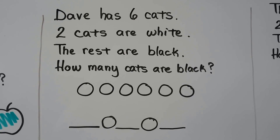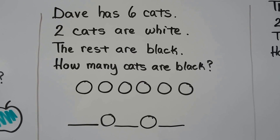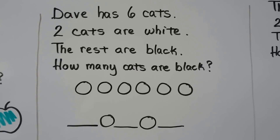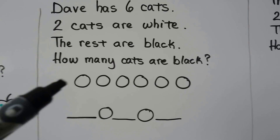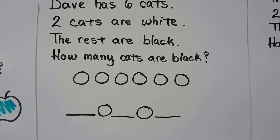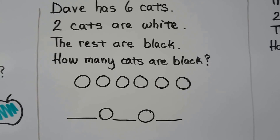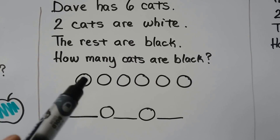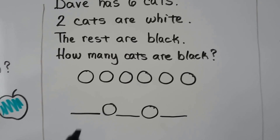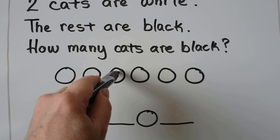Dave has six cats. Two cats are white, the rest are black. How many cats are black? We make six circles: one, two, three, four, five, six for the six cats. Two cats are white, so we can leave these two white. The rest are black — we're going to leave two of them white and make the rest black.